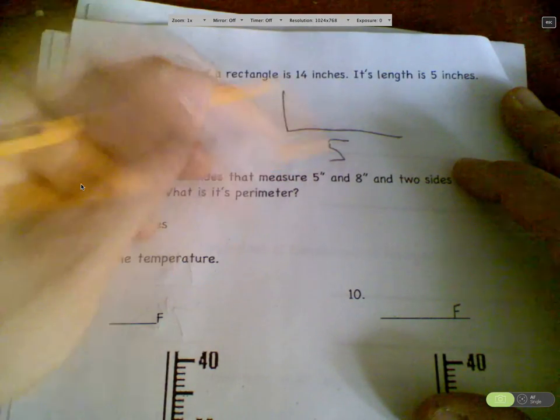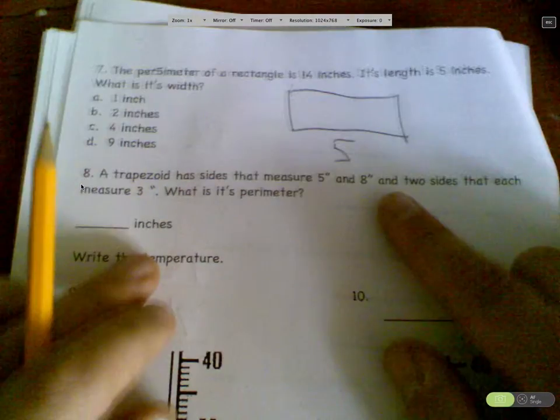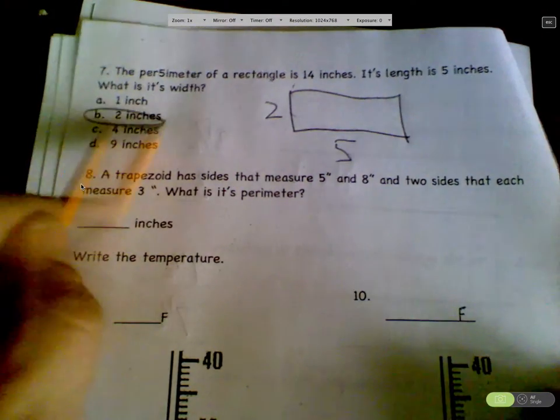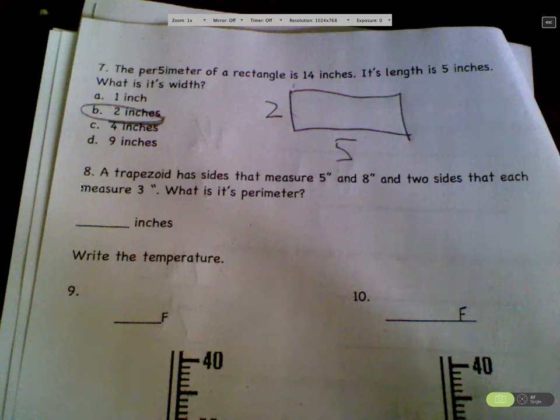Alright. A perimeter of a rectangle is 14 inches. Its length is five. If it's 14, that needs to be seven. Half of it needs to be seven, so that width would be two. See that? Yeah. Because then it's going to be 14 and all.